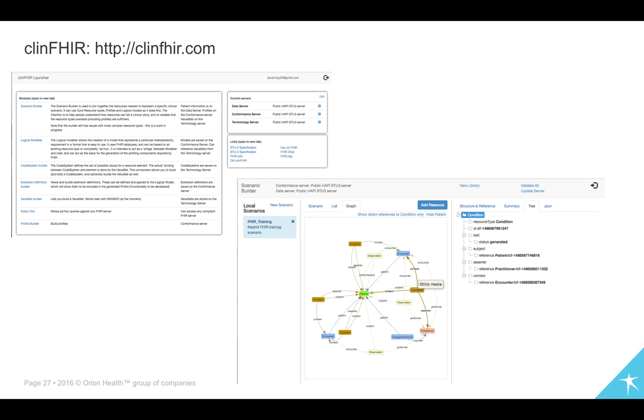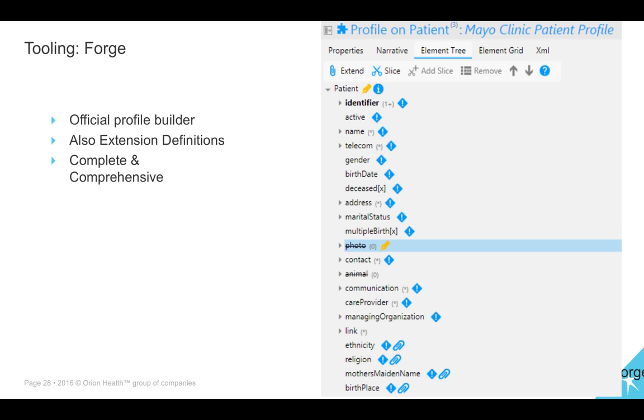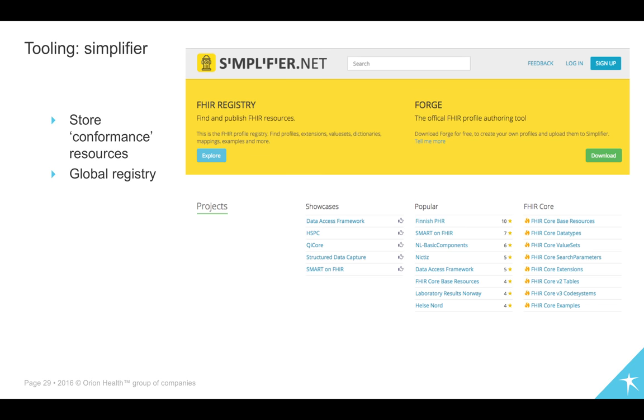There's just a screenshot of a few of the interfaces there. That top left is the starter interface. Bottom right is showing a real graph there showing a consultation. Forge is the main profiling tool. It's available from Furore based in the Netherlands. It's a very comprehensive tool. It's the one I believe that you're using in the UK at the moment. And Simplifier is a repository, a registry for storing the artifacts, the profiling artifacts that are required.